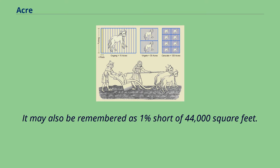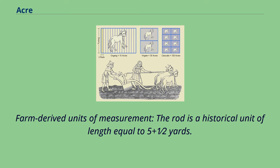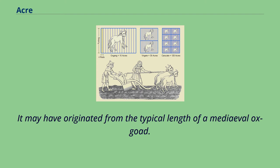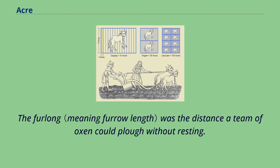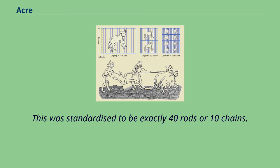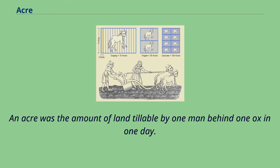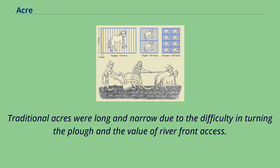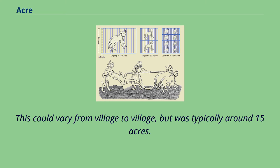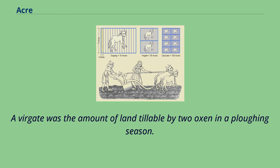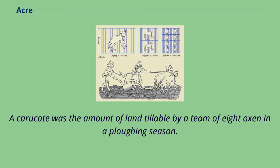Farm-derived units of measurement: The rod is a historical unit of length equal to 5.5 yards. It may have originated from the typical length of a medieval ox goad. There are four rods in one chain. The furlong was the distance a team of oxen could plow without resting, standardized to be exactly 40 rods or 10 chains. An acre was the amount of land tillable by one man behind one ox in one day. Traditional acres were long and narrow due to the difficulty in turning the plow and the value of riverfront access. An ox gang was the amount of land tillable by one ox in a plowing season, typically around 15 acres. A virgate was the amount of land tillable by two oxen in a plowing season. A carucate was the amount of land tillable by a team of eight oxen in a plowing season, equal to eight ox gangs or four virgates.